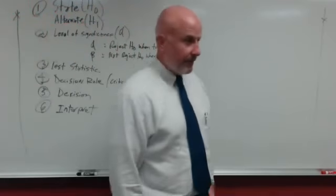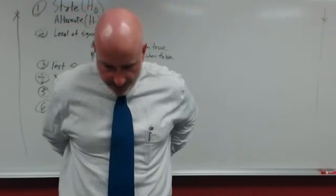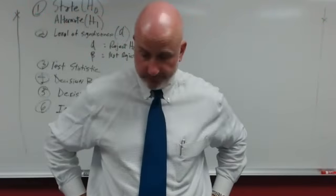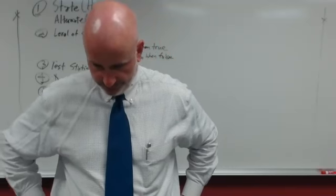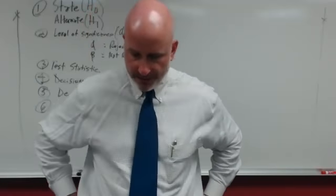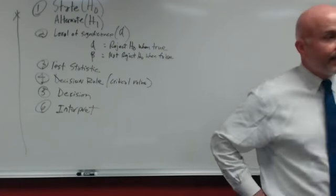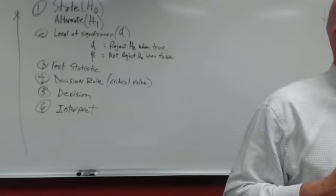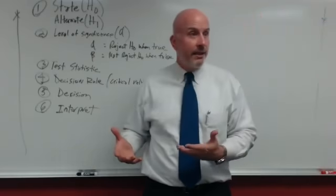Let's define the p-value. On page 329: the p-value is the probability of observing a sample value as extreme as, or more extreme than, the value observed given the null hypothesis is true. Whatever deviation we're seeing, the p-value tells us whether that deviation was caused by pure chance — not related to any other factors.